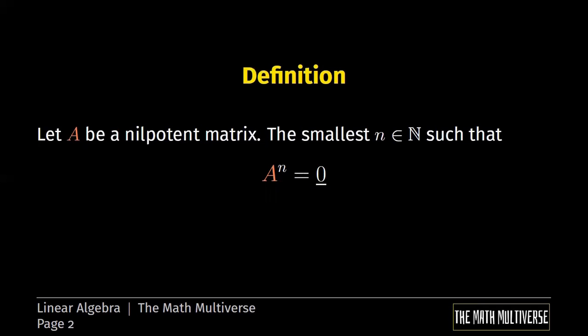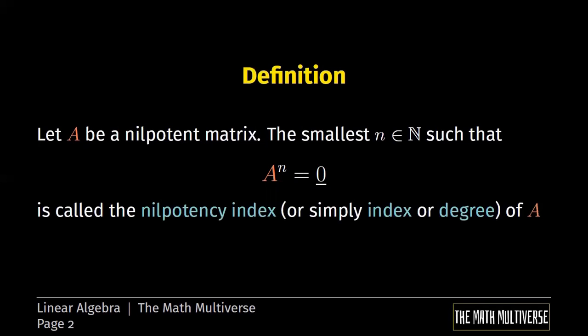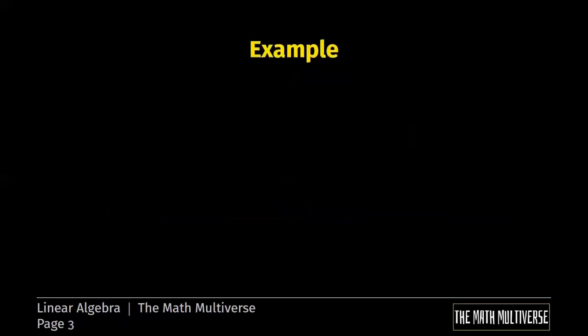So the nilpotency index is the smallest integer such that A to the n is equal to 0. You can also call it index or degree. What does a power of A mean? This we are going to see with the next example, which is the first example of the day.